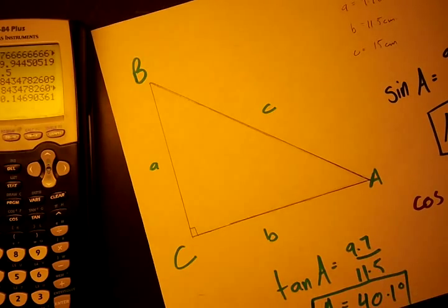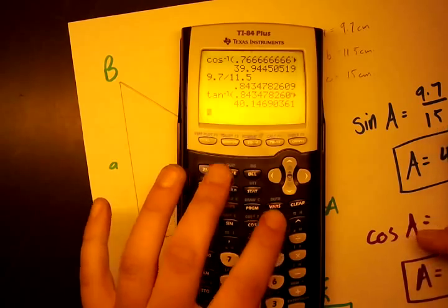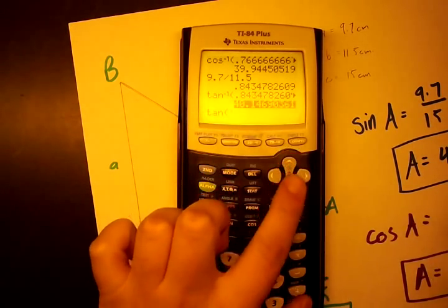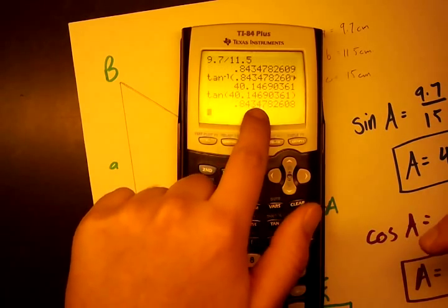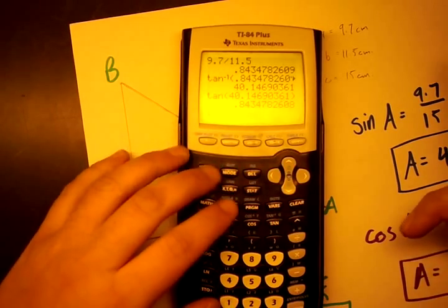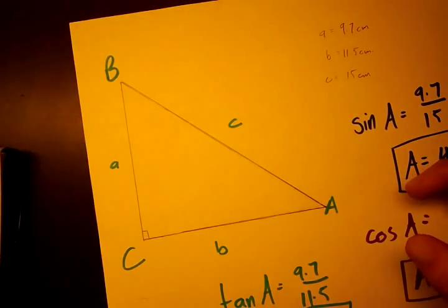And as a quick note, when we take second sine, second cosine, or second tangent, that's going to give us the angle. If we take the tangent of that angle, we're going to get 0.8434, which is what we got when we divided 9.7 over 11.5. So tangent and inverse tangent are inverse functions, and that's helpful because it helps us find the angle.